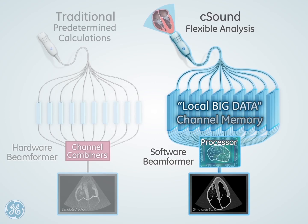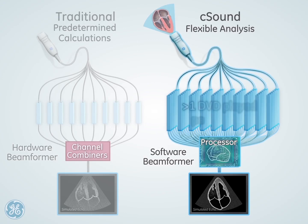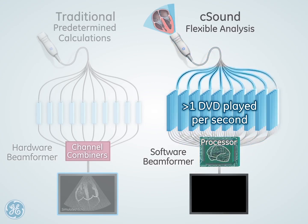The local big data channel memory is an integral part of this processing chain. An enormous amount of RF channel data is temporarily stored and intelligently processed at a data rate exceeding that of one DVD played per second.